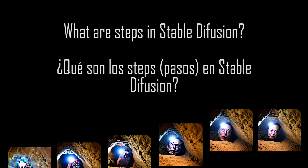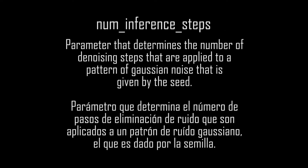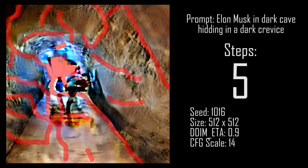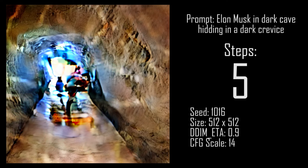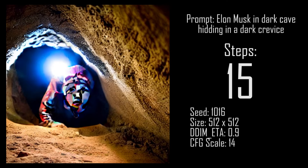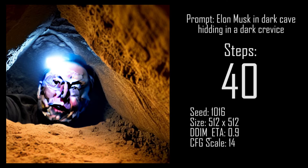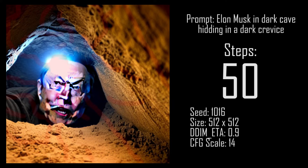Steps in self diffusion is a parameter that determines the number of denoising steps applied to a pattern of Gaussian noise that is given by the seed. This means that at our first image, with just 5 steps, we got a pattern given by the Gaussian noise that doesn't look anything like our desired prompt. But as we start increasing the number of steps, we can see how the image starts getting closer to our prompt and getting far from our first pattern with the Gaussian noise, as the image is being fixed a little in every step.